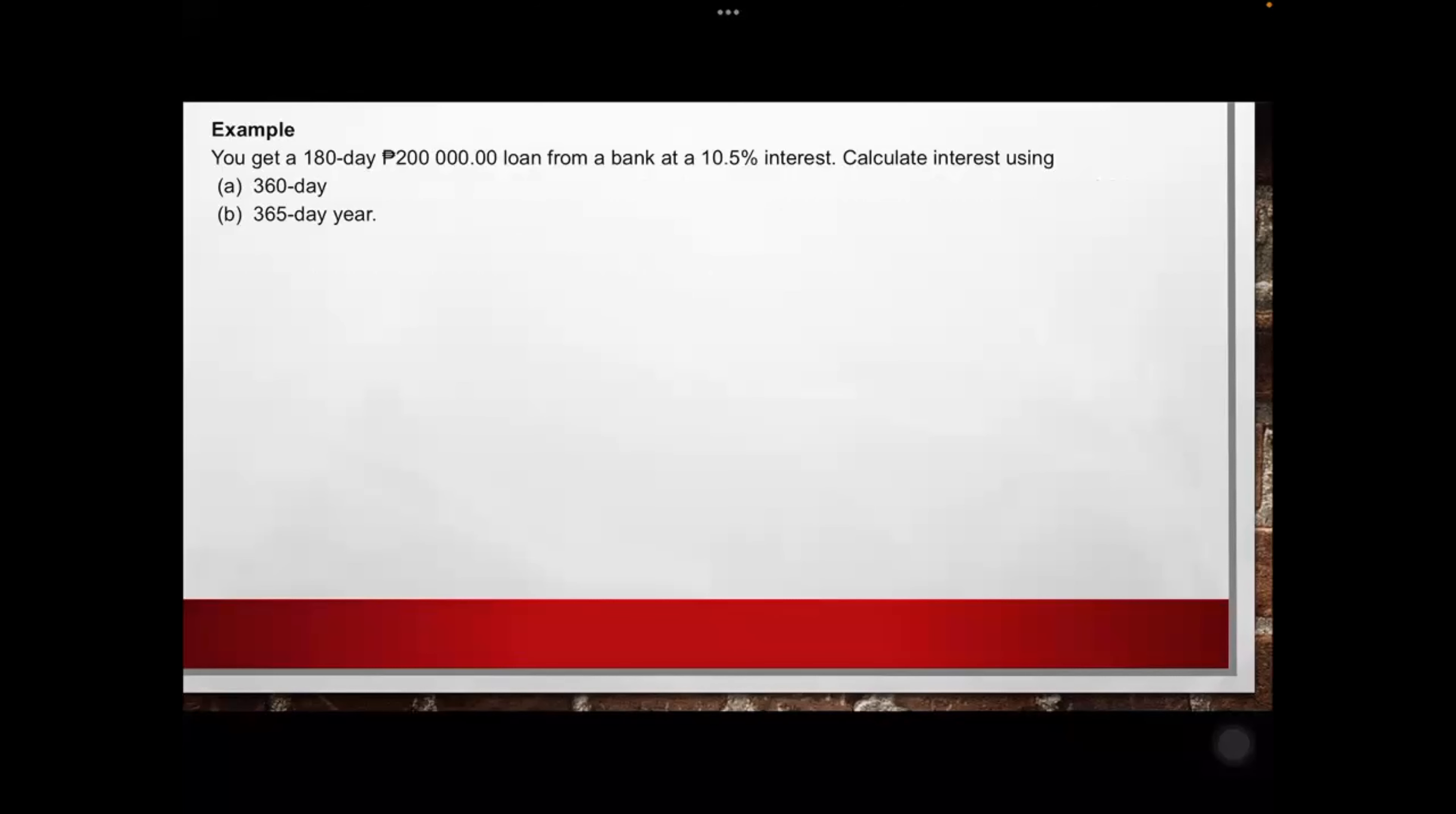Example: You get a 180-day, 200,000 loan from a bank at 10.5 percent interest. Calculate interest using the 360-day and 365-day per year. So let's identify the given first. Given, the time is 180 days, the principal equals 200,000, and the R equals 10.5 percent which equals 0.105. You have to move the decimal twice to the left when converting to decimal. So 10.5 is equivalent to 0.105. Letter A, we have to find using 360. Letter B, using 365. So I equals PRT.